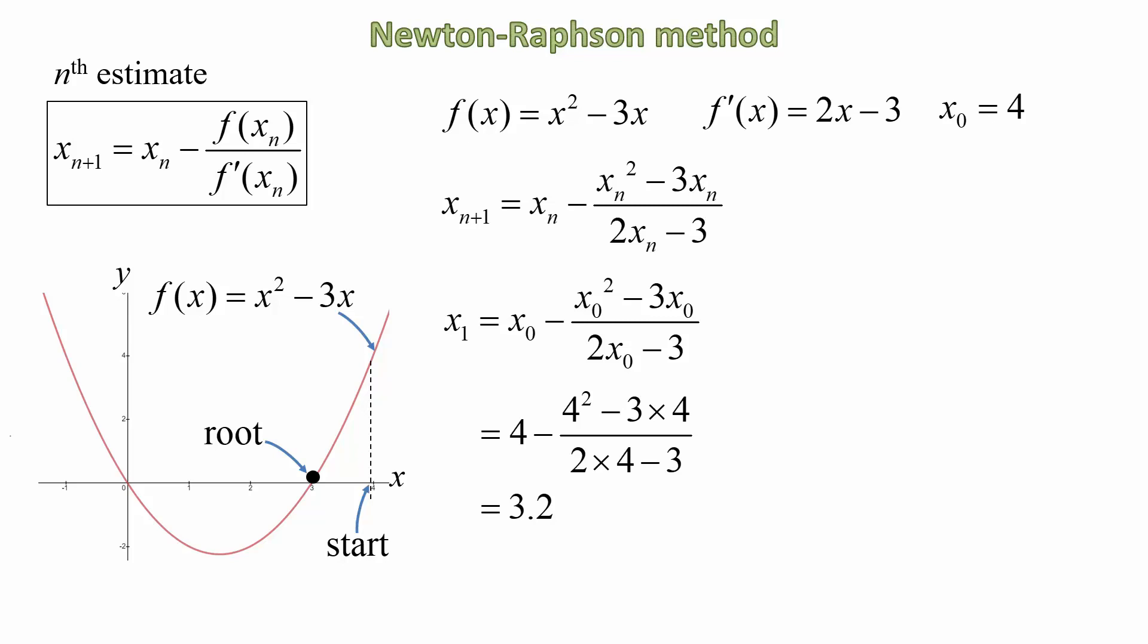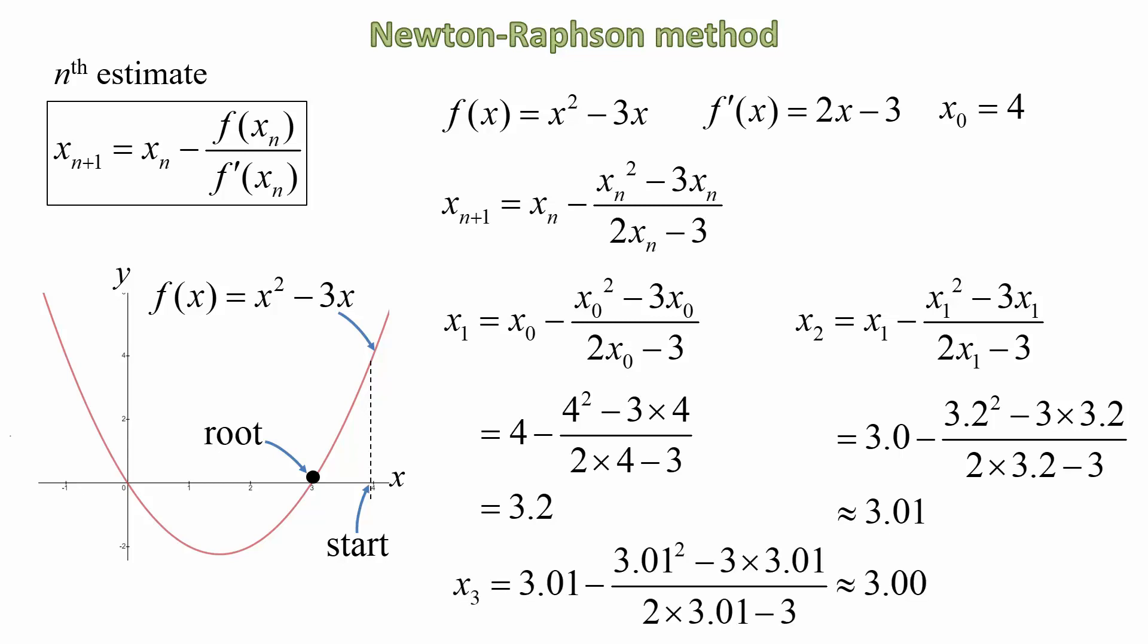Let's obtain an estimate for x₂ by using x₁ as our starting point. Again, substituting n = 1 in the general expression. And then x₁ is 3.2, and that gives us an estimate of approximately 3.01, which is quite close to our exact value. Now, if we do one more, x₃, we get approximately a value of 3.00. So after only two iterations, because x₀ = 4 was our initial guess, we have come pretty much spot on to our exact value. So the Newton-Raphson method seems to be quite effective. It converges quite quickly to our desired value.